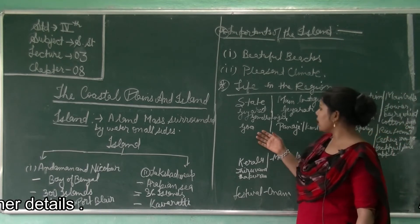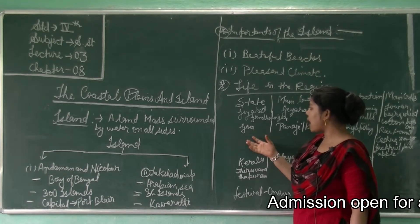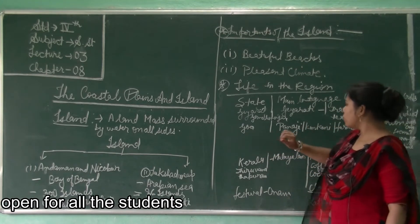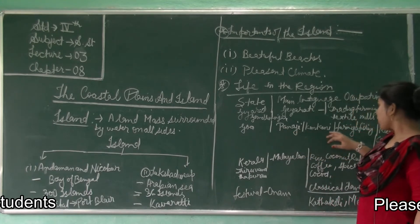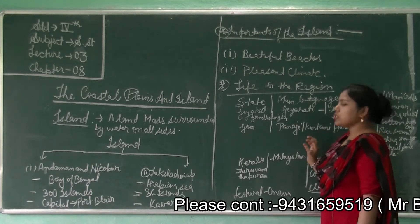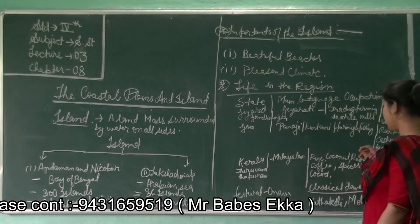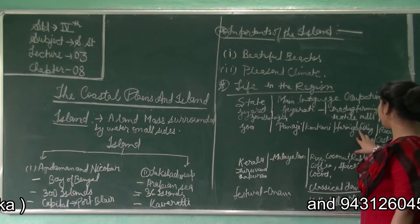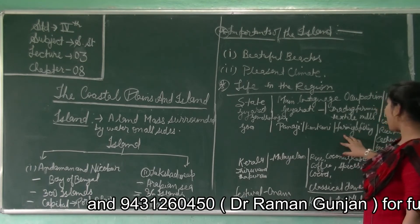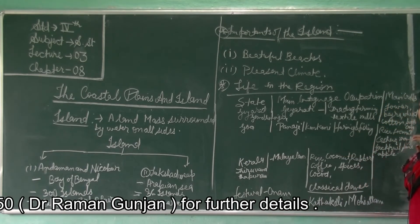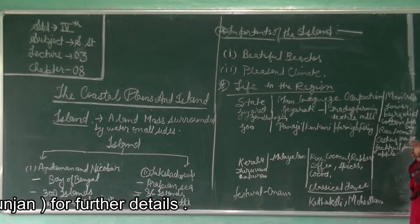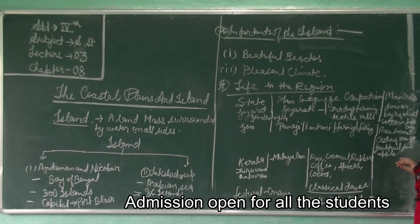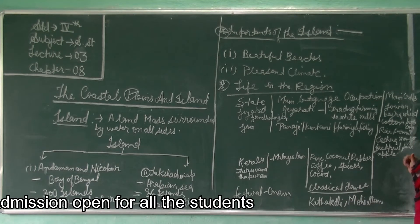The next state is Goa. The capital of Goa is Panaji and the language spoken here is Konkani. The occupations people follow are farming and fishing. The main crops of Goa are rice, coconut, cashew, mangoes, jackfruit, and pineapple.